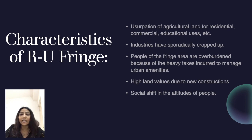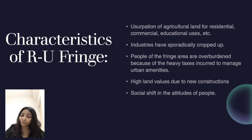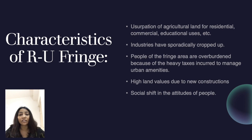Number three: people of the fringe areas are now burdened with paying heavy taxes for the urban amenities which they are receiving. Next is high land values — because of new constructions coming to rural-urban fringe areas, land values are rising very fast. Because of all these reasons, we can see a social shift in the attitudes of the people.